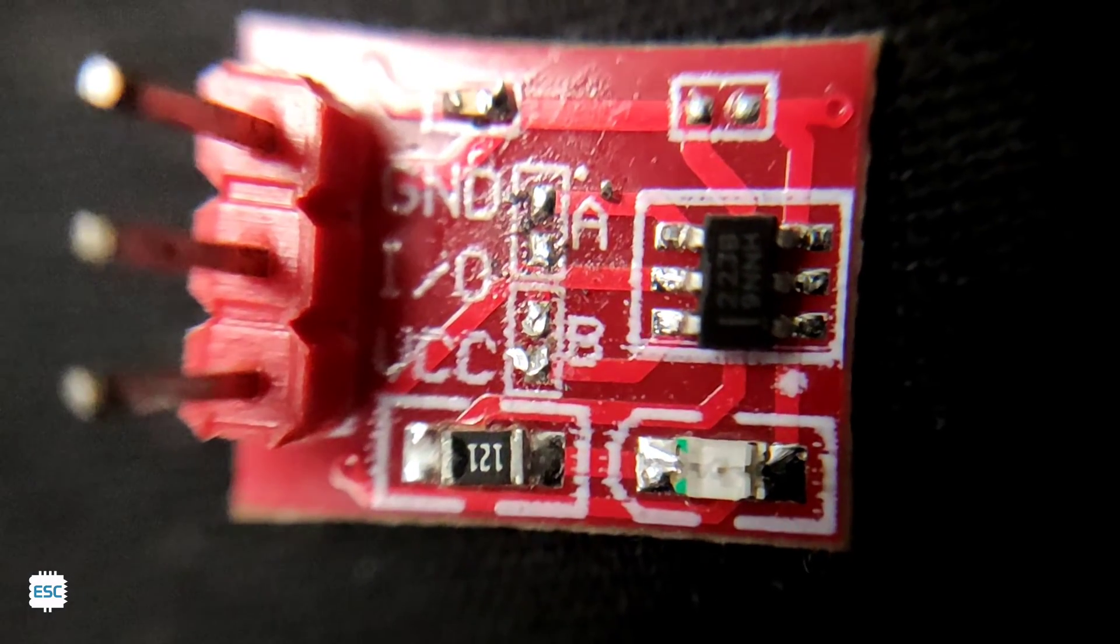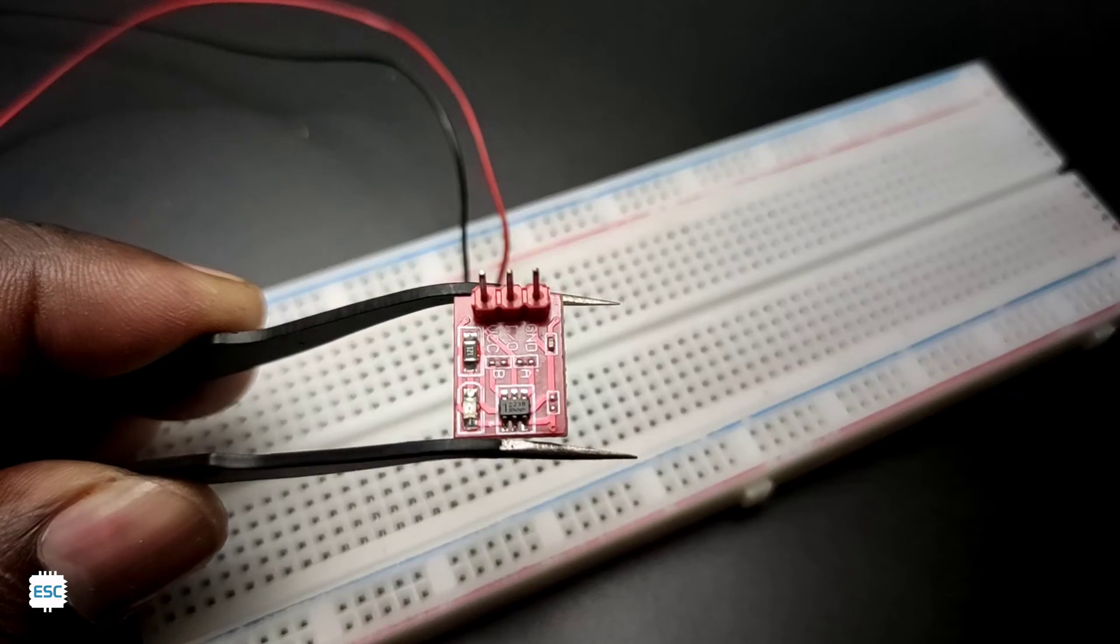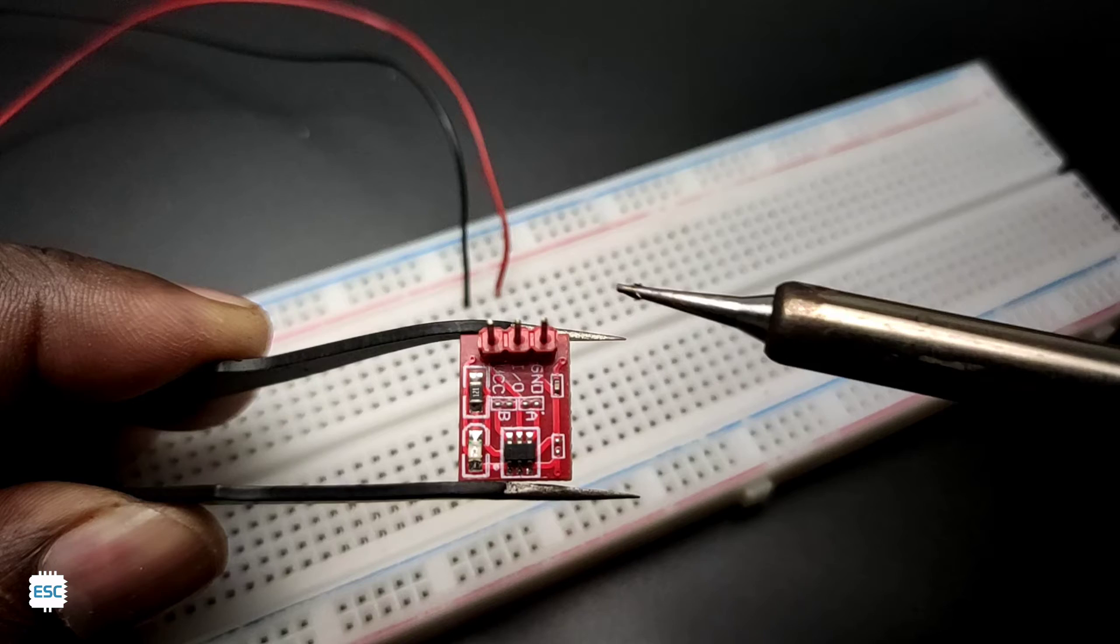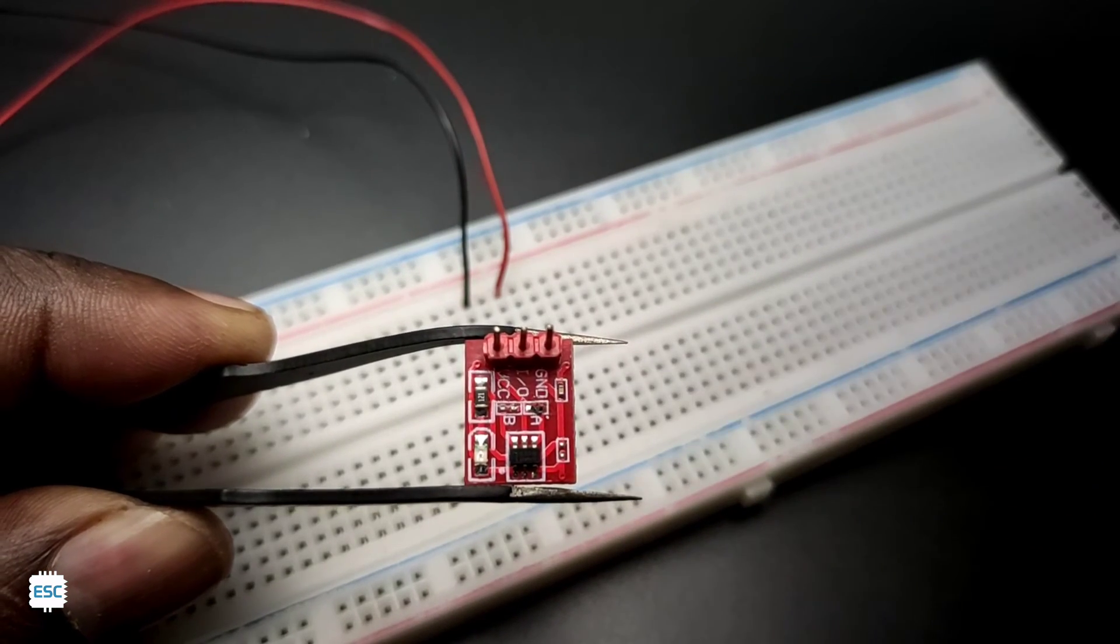You can see the two solder joints on the module labeled as A and B. So first, let's solder the A joint. That's the first mode.